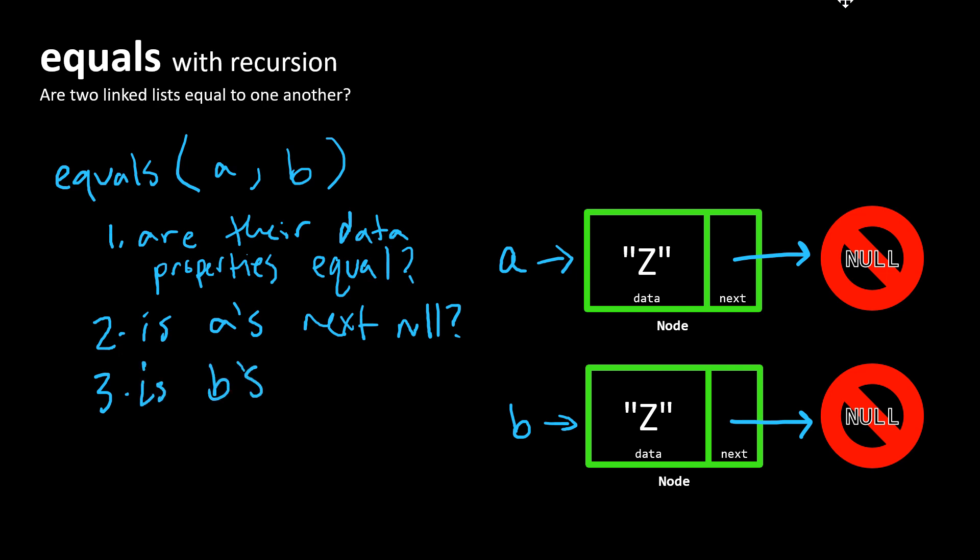So is B's next value null? We have these three conditions here that all must be true in order for these two nodes to be equal to one another.